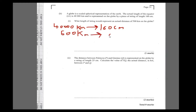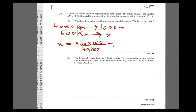Setting up the proportion: 40,000 km corresponds to 160 cm, and 500 km corresponds to x cm. Cross-multiplying gives x = (500 × 160) / 40,000, which equals 2 centimeters. So 2 centimeters of string represents 500 kilometers.